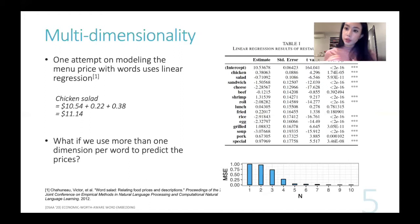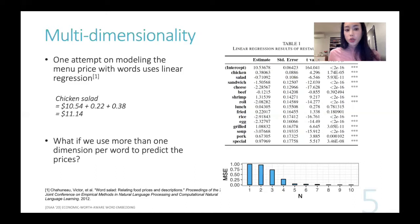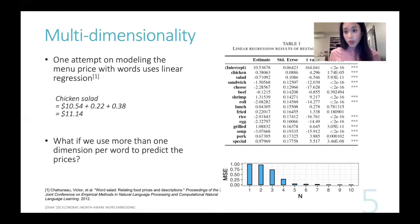One of the papers that attempted to capture such a concept of word price is a paper called Word Salad. They did collect a lot of menu data, and what they did was run a linear regression where each of the words is simply associated with a coefficient in the linear regression model. However, we do believe this oversimplifies the problem. When we ran experiments through a simple single-layer neural network by varying the number of dimensions in the hidden layer, we see that as you increase the number of neurons, the mean square error decreases dramatically when predicting price from menu dish text descriptions.